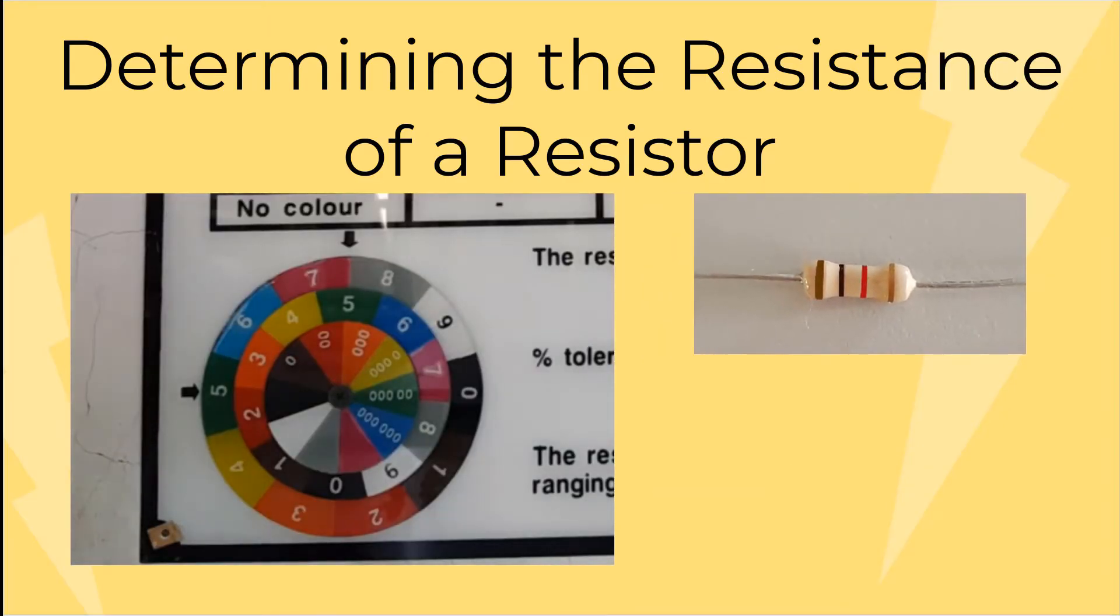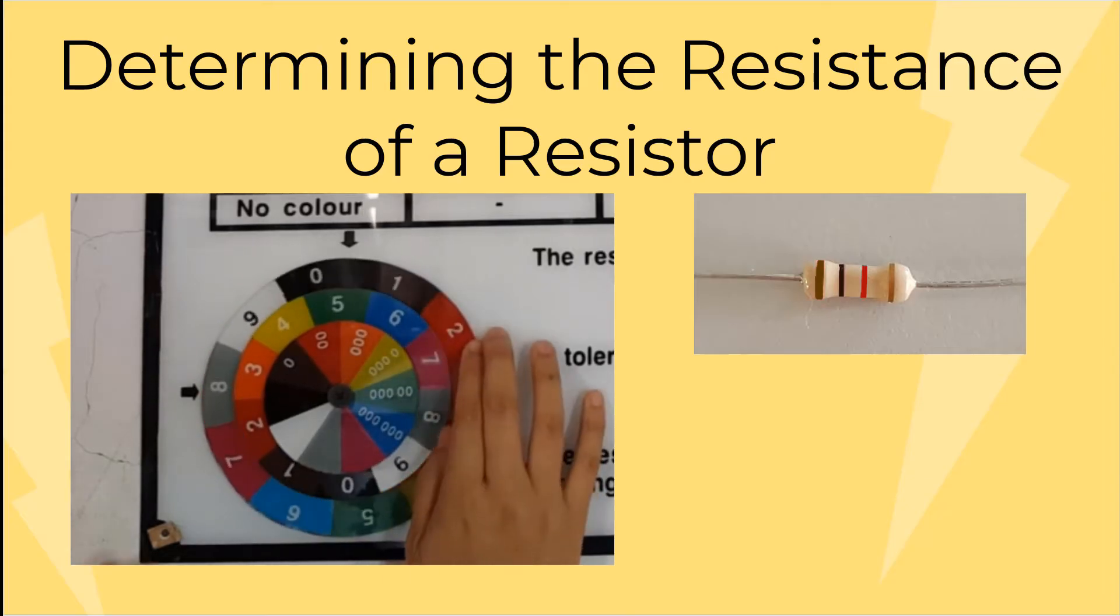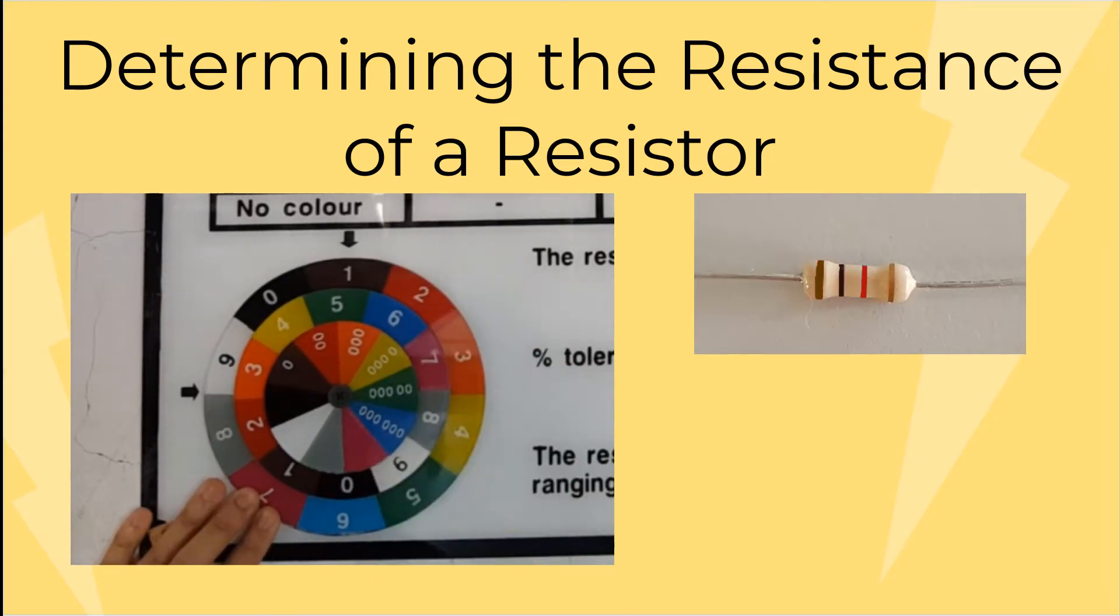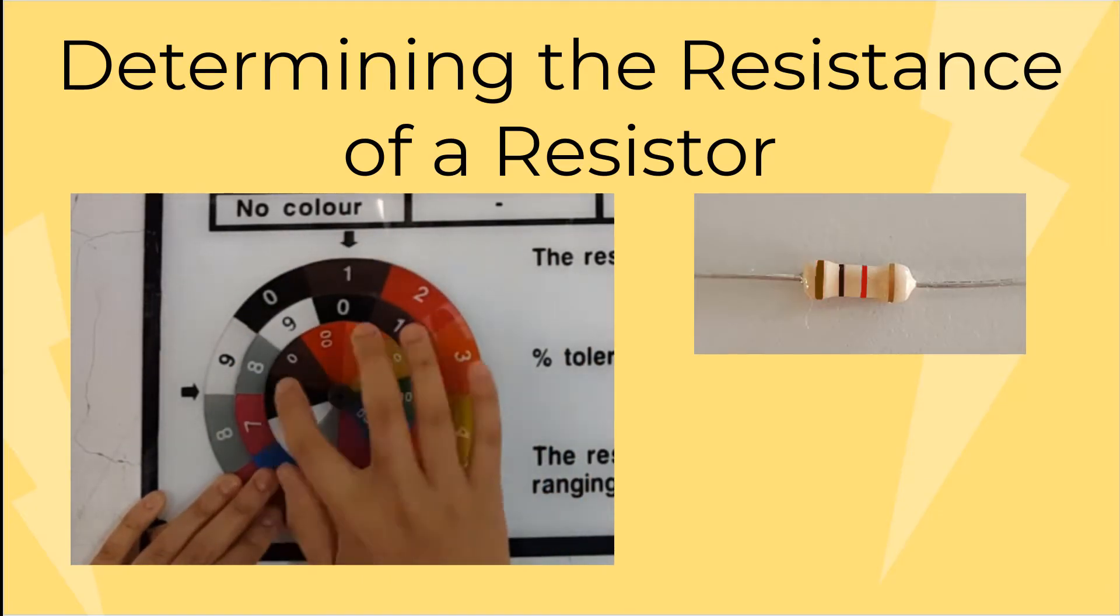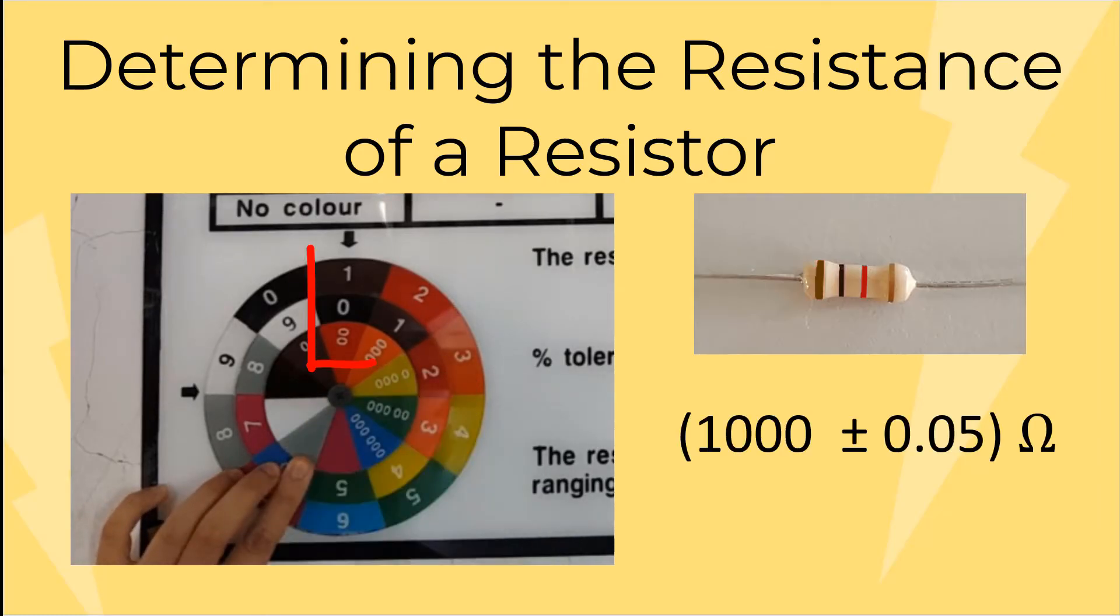Another method is by using the color wheel. Brown, black, and red will give you 1000 ohm followed by tolerance 0.05 ohm.